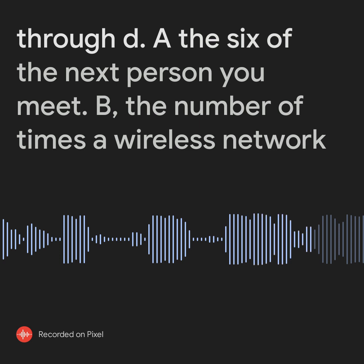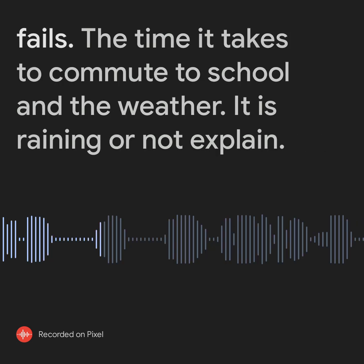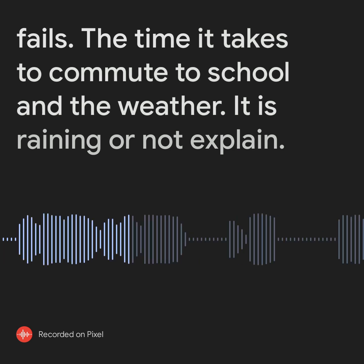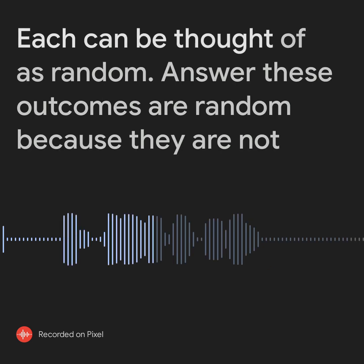A. The sex of the next person you meet. B. The number of times a wireless network fails. C. The time it takes to commute to school. And D. Whether it is raining or not. Explain why each can be thought of as random.